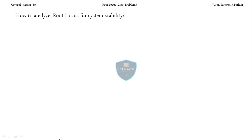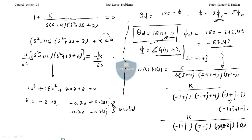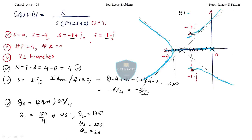Today we'll see a very important point related to root locus: how to analyze system stability from the root locus. We have drawn this in the last class. I'll analyze this graph and then we'll switch to the GATE problems.